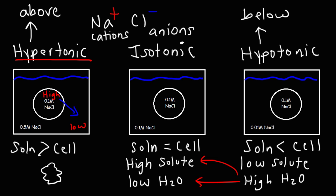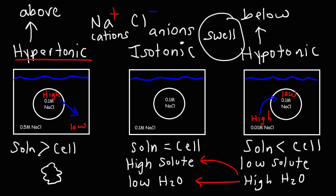In a hypotonic solution, the solution on the outside has a lower concentration of solute particles than inside. The solute concentration is lower outside, which means the water concentration is high outside the cell and low inside. So water flows down its concentration gradient into the cell. As that continues, the cell is going to swell, getting bigger as more water flows in through membrane channels such as aquaporins, and may even burst in a process known as cytolysis.